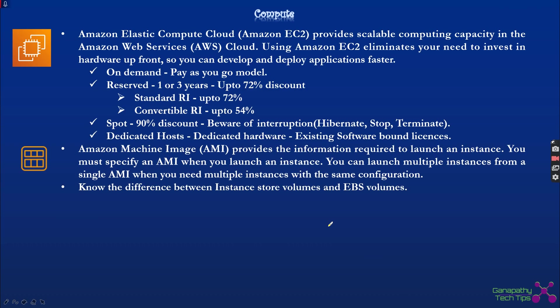The first compute option is AWS EC2 — Elastic Compute Cloud. AWS provides this as an Infrastructure as a Service offering. It eliminates your need to invest in additional hardware, provides push-button scaling, and operates on a pay-as-you-go pricing model, so you only pay for the infrastructure you actually use.